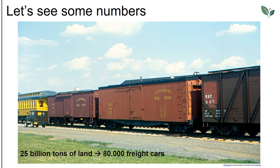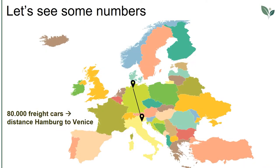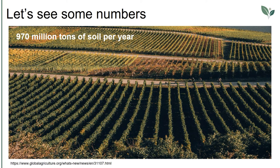In Germany, the risk is much lower than in drier countries such as Spain, Italy, or African countries, or even the USA. In this slide, you can see the distance from Hamburg to Venice, which is equal to 80,000 freight cars. The European Union is losing 970 million tons of soil per year due to water erosion, an amount equivalent to a 1-meter depth loss of soil from an area the size of the city of Berlin, or enough to cover an area twice the size of Belgium with 1 cm of soil.